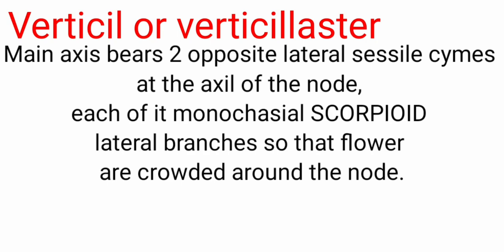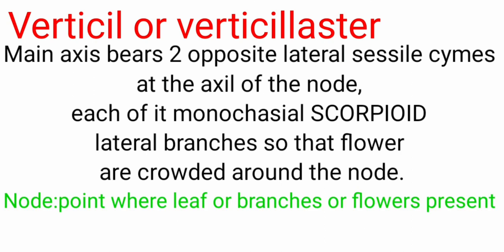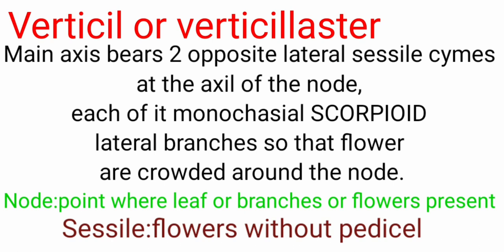Next is the verticillaster. Here the main axis bears two opposite lateral sessile cymes at the axil of each node. Node is a point where the leaf, flower, or branch is produced from the stem of the plant. Sessile is defined as the flower which does not contain the pedicel, that is the stalk of the flower. In the verticillaster mixed inflorescence, the central axis contains two opposite lateral sessile cymes, with monochasial scorpioid cymes present in a sessile manner, producing a crowded structure at the node point of the plant.